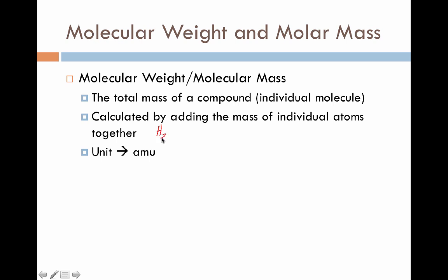So, for example, if you have the compound H2O, we can take 2 times the mass of hydrogen, 1.00794, plus 1 times the mass of oxygen, 15.9994, and then we can add all that up to find out that the mass of one H2O molecule is 18.01 atomic mass units. And again, because it's one molecule at a time, it's atomic mass units.